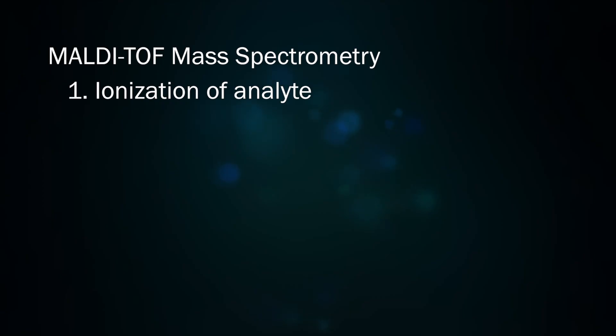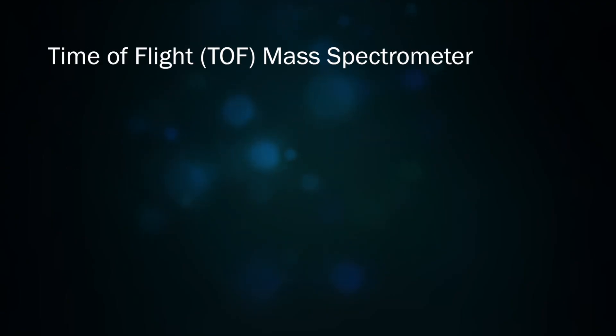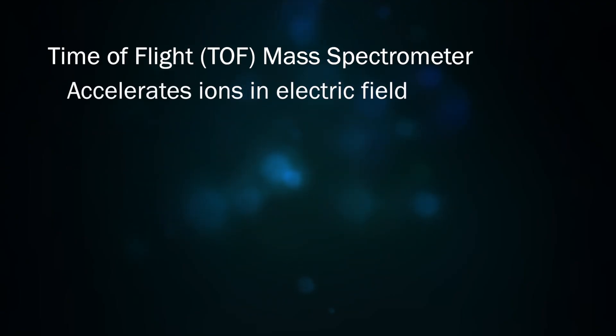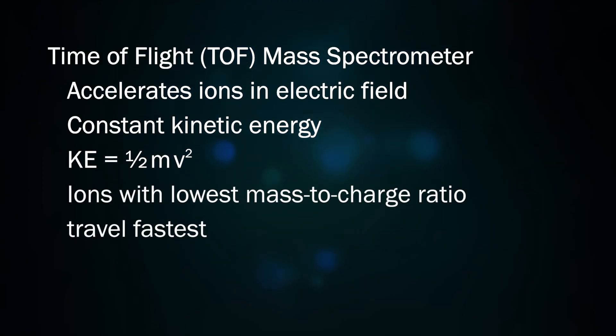Now that the gas phase analyte ions have been generated, their masses can be analyzed by the time-of-flight mass spectrometer. The time-of-flight process accelerates the gas phase ions in a high-voltage electric field. This field imparts a constant amount of kinetic energy on the ions. Because kinetic energy is equal to one-half mass velocity squared, a constant kinetic energy will cause the smallest of the ions to travel the fastest.